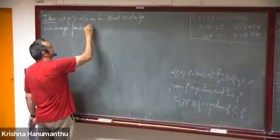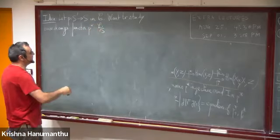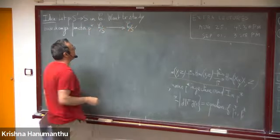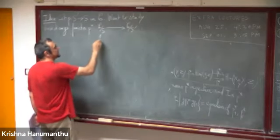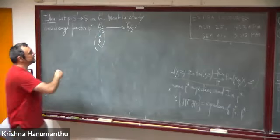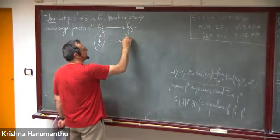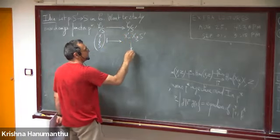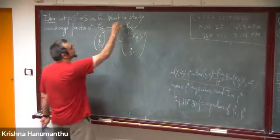This base change functor goes from the category of objects over S to the category of objects over S'. An object here is just a map from an object to S, and to this we associate the fiber product X ×_S S'.